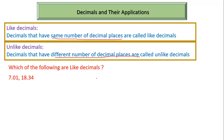So first I am going to find the number of decimal places in the first number. The first number is 7.01. In 7.01, to the right side of the decimal point there are two places. Since there are two decimal places, this number has two decimal places.